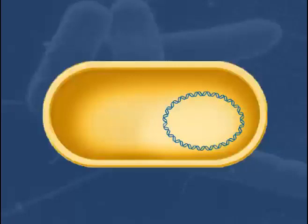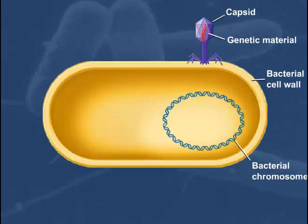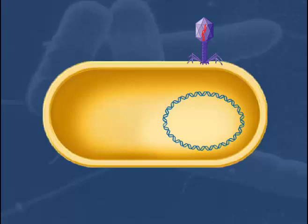The life cycle of bacteriophage T2 begins with a bacteriophage particle binding to the surface of the bacterial cell. The phage particle injects its genetic material or DNA carried in the capsid of the bacteriophage into the host cell.